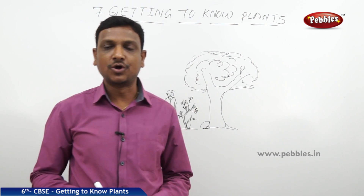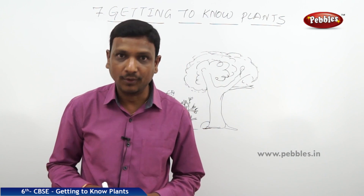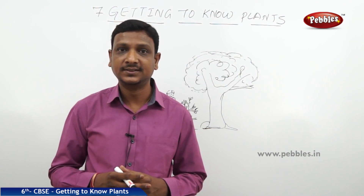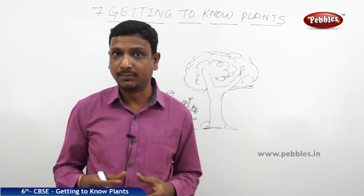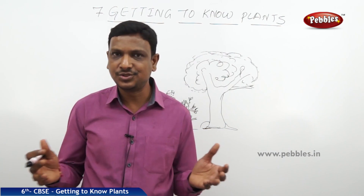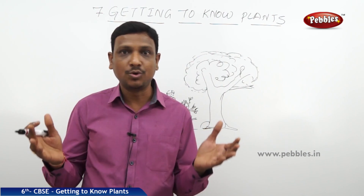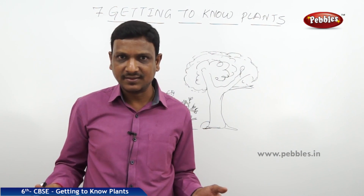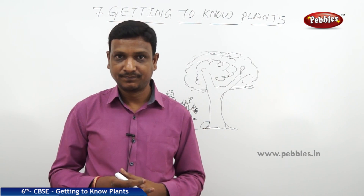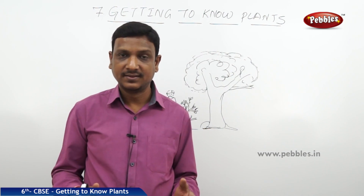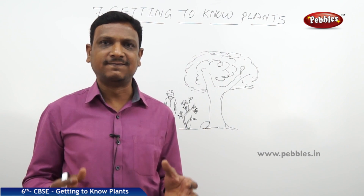Good morning children! Today our topic is all about plants. We know so many things about plants — they are living things, mostly green in color, found in gardens, fields, crops, and on the roadside. They are of different sizes, and as per their size you call them by two different names: the small ones you call plants and the big ones you call trees. But is this naming scientific? Is there a systematic way of calling the plants?